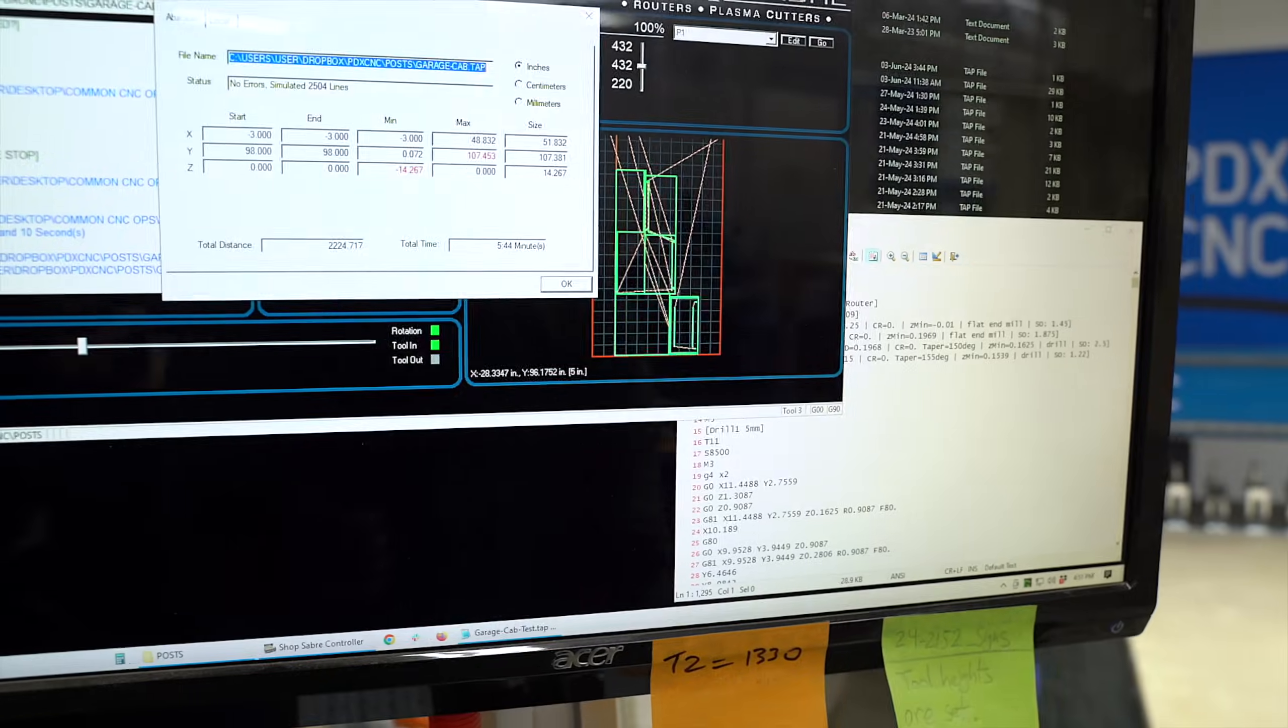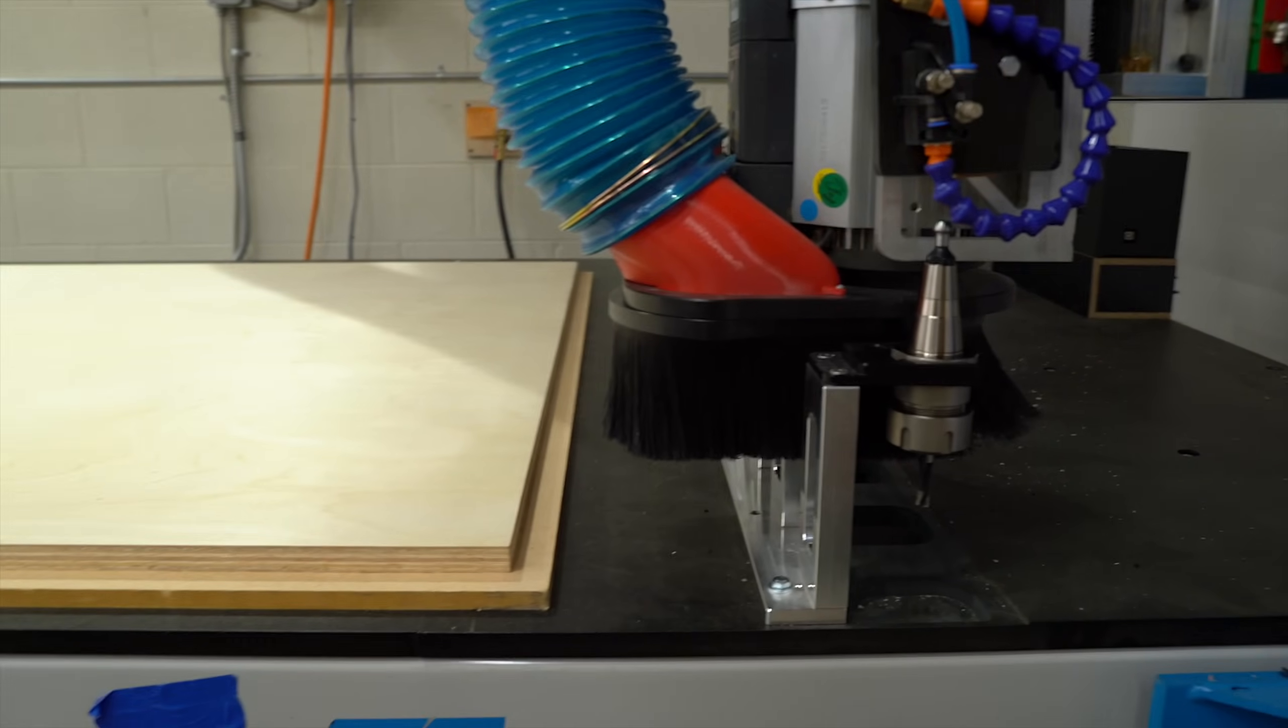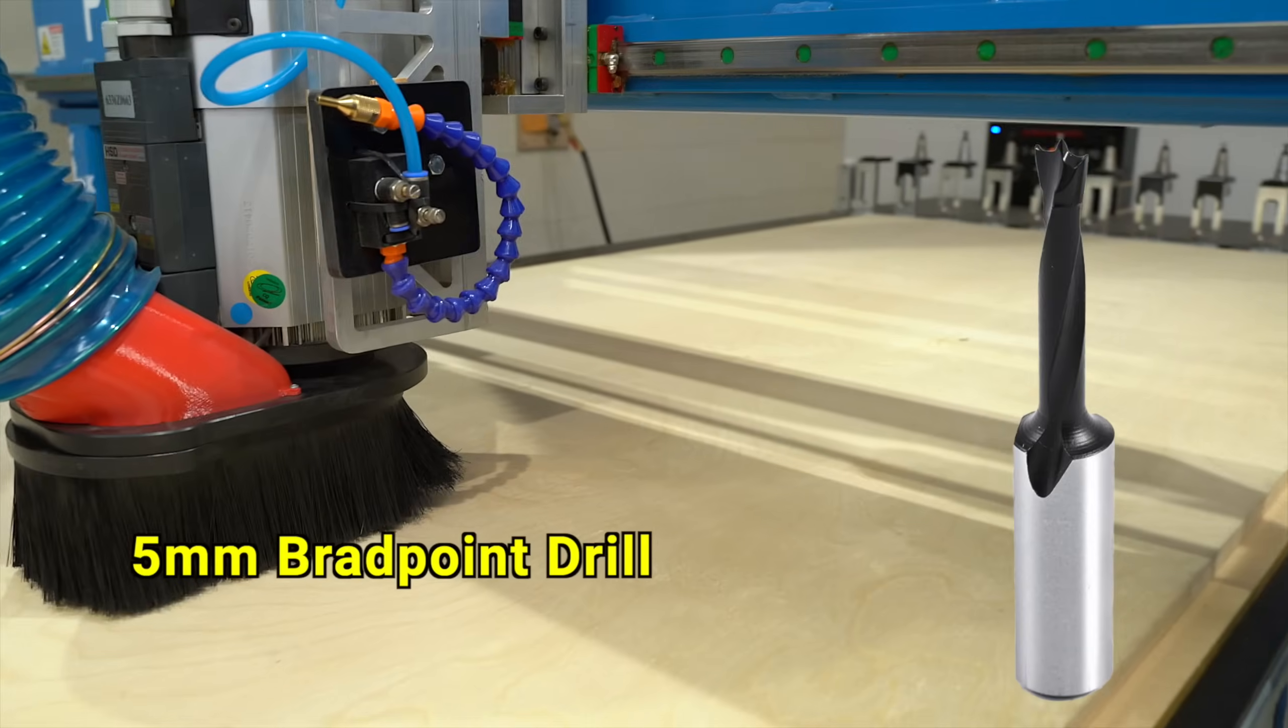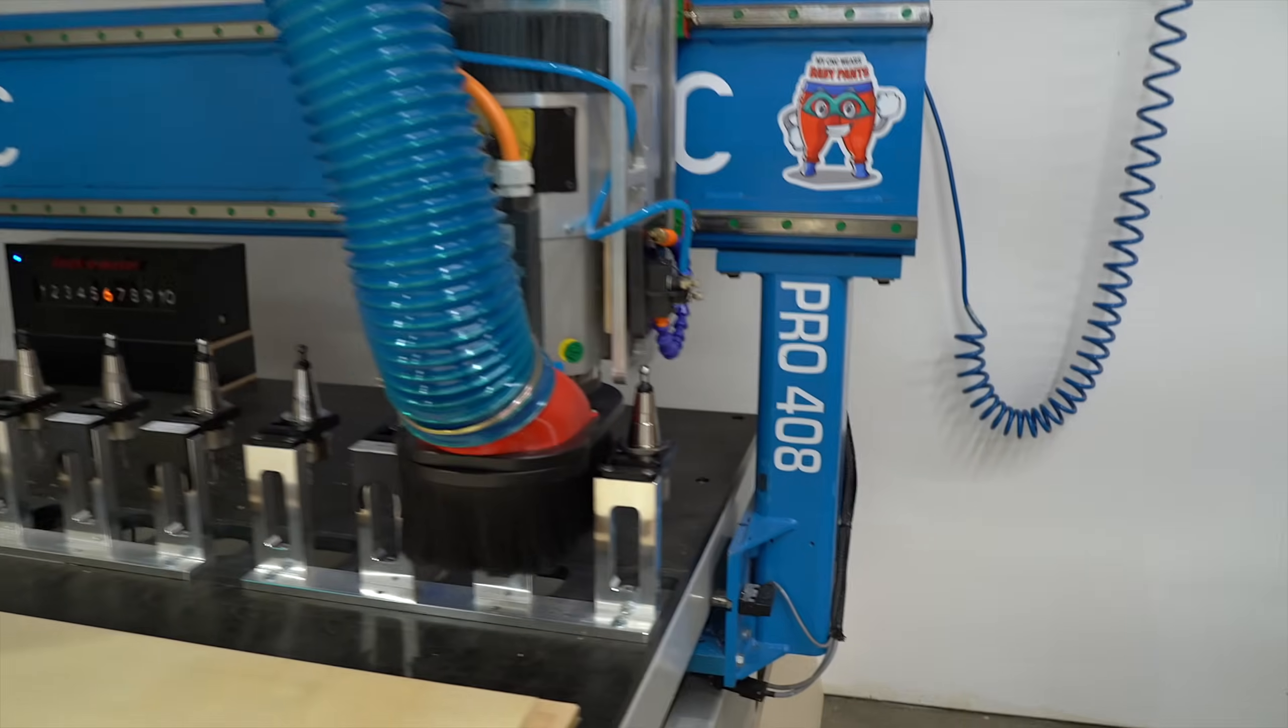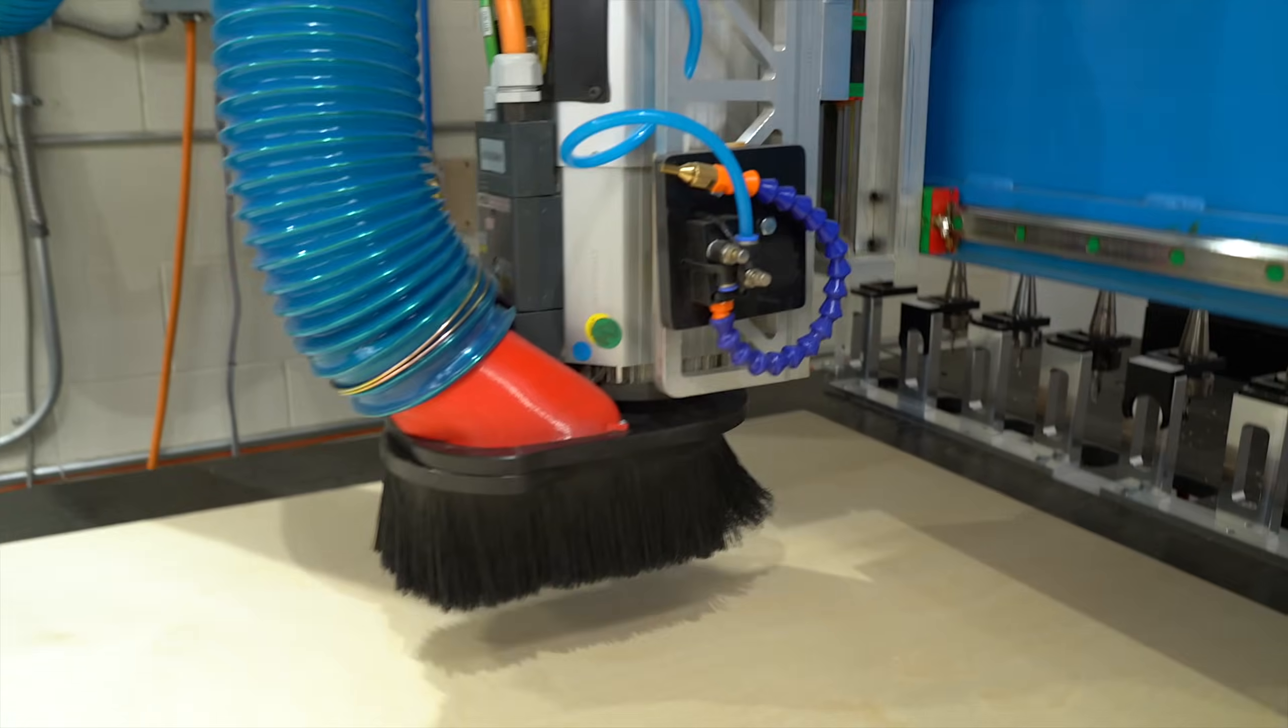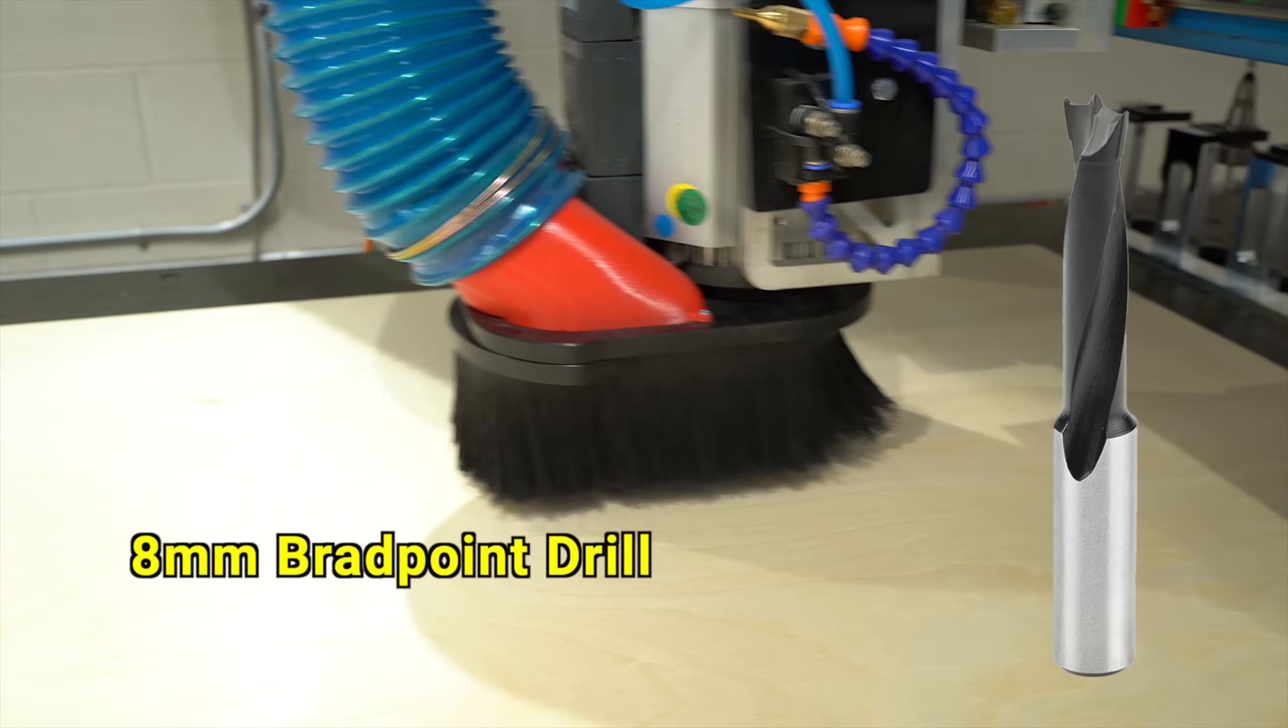Here we go. Start out with some drilling with the five millimeter brad point tool. This is for like adjustable shelf pins. If you think you can drill as fast as a CNC, you're wrong. We're already on to the eight millimeter brad point for the hinges.